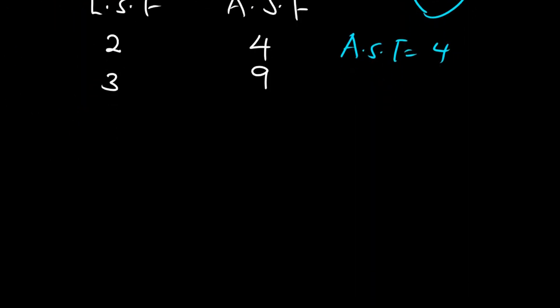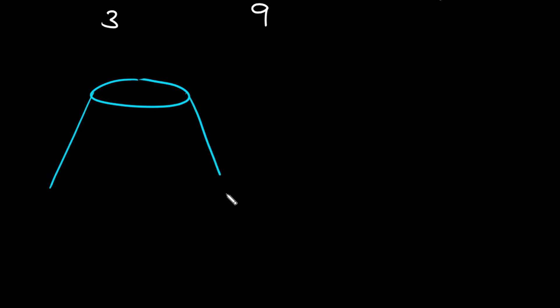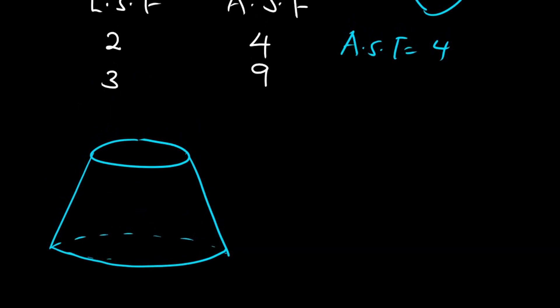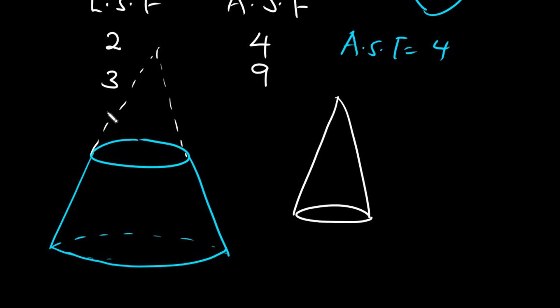That's how we apply this knowledge on linear scale factor and area scale factor. Let's look at yet another example. In a previous video, we learned how to find the volume of a frustum of a cone, and that is also an area where we apply knowledge on linear, area, and volume scale factors. A frustum of a cone is derived from a cone: if we have one big cone and it is cut at some point, what we are left with is a frustum. After it's cut, we get a smaller cone as well.